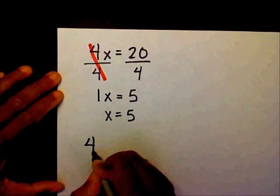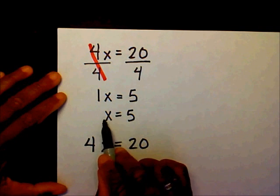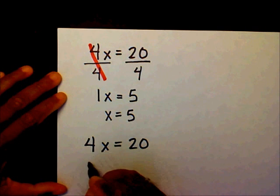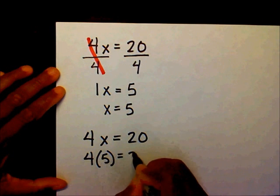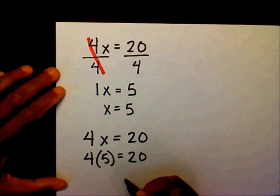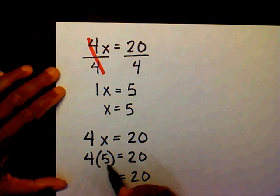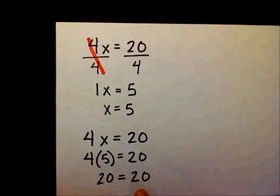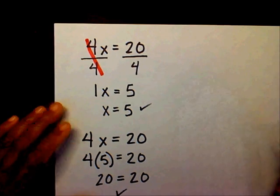Let's check it. I have 4x equals 20. Right now I believe x equals 5, so I want to substitute the 5 in for my x. I want to bring my 20 down and 4 times 5 is 20. Since I have the same result on both sides, I know that this is correct and x equals 5.